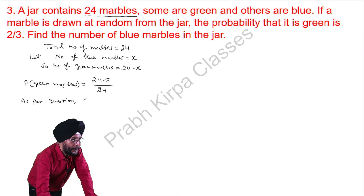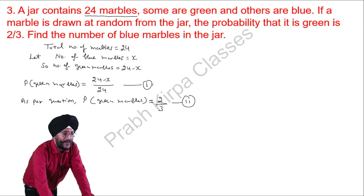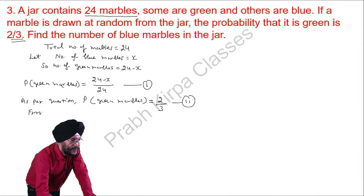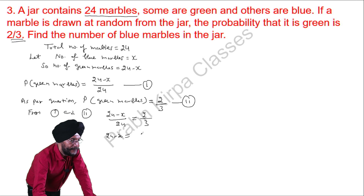As per the question, the probability of green marbles is equal to 2 over 3. Setting our calculated expression equal to the given value: 24 minus x over 24 equals 2 over 3. We can rewrite this as 24 times 2 over 3, and dividing 24 by 3 gives 16.